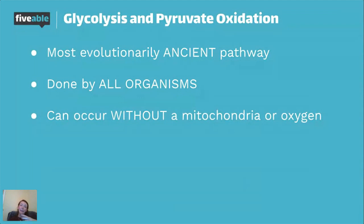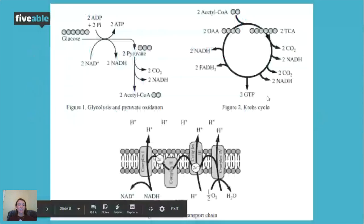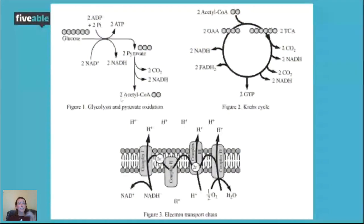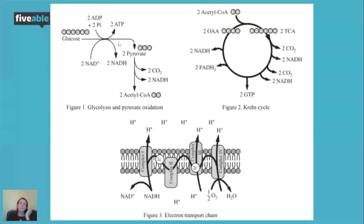Glycolysis is done by all organisms, can occur without a mitochondria, and can occur without oxygen — so even bacteria in an anaerobic environment still go through glycolysis. Glucose is a six-carbon molecule that gets broken down into two three-carbon molecules called pyruvate. In the process of breaking bonds, we release some energy.